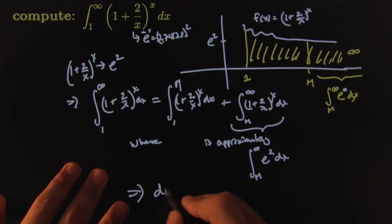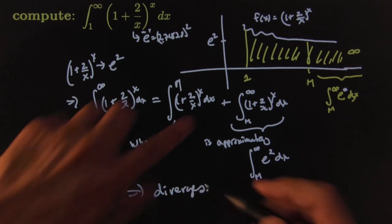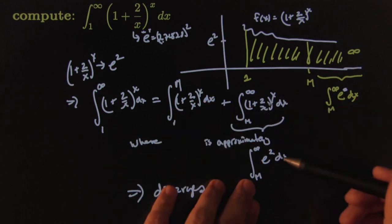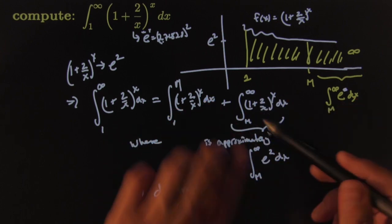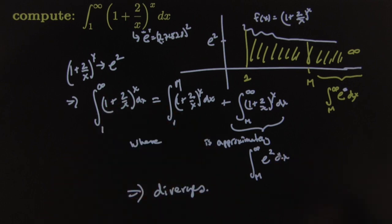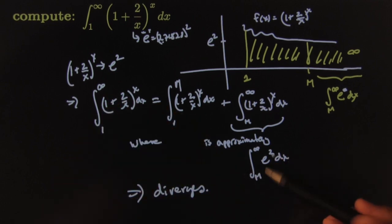Therefore this clearly diverges. Even though this piece is finite from 1 to some m, after some point this will be within epsilon of e². There's no hope—the tail end of the integral will behave like e² and it will be really infinite.